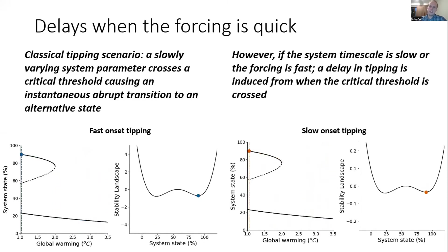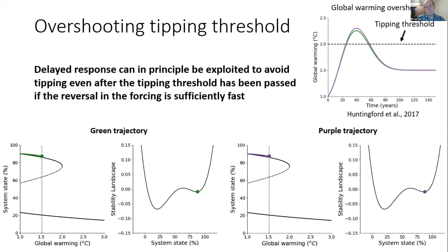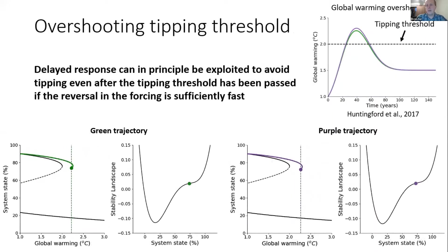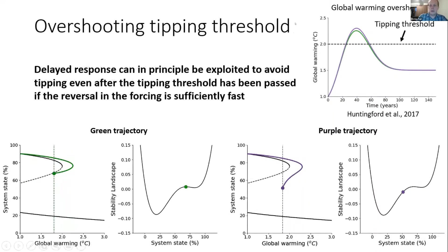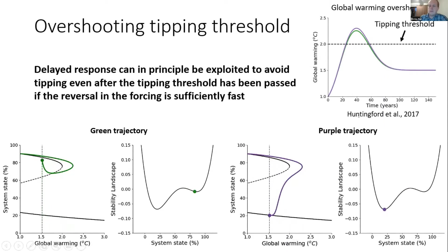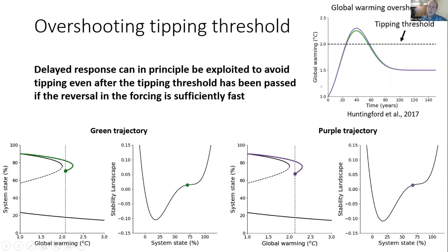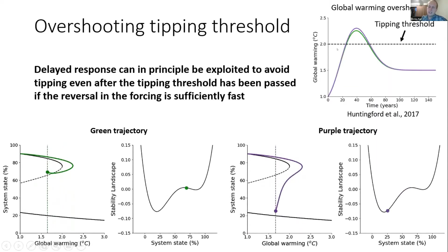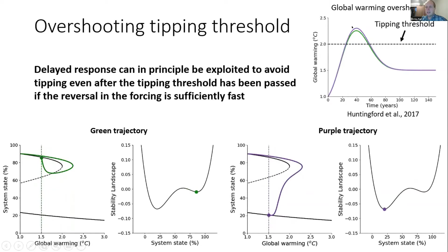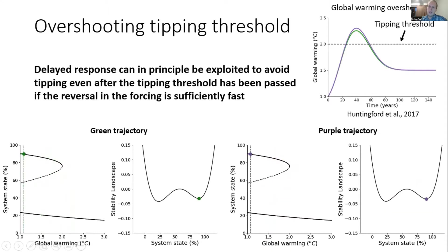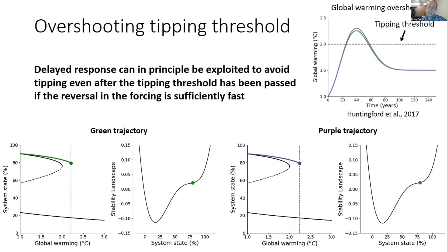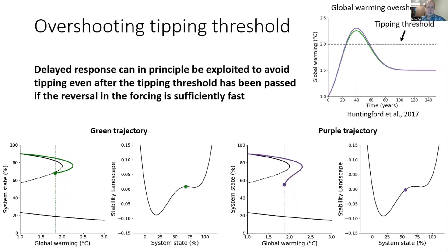We're now going to take this slow onset tipping system and force it with global warming overshoots as given in the top right here. These take the form from the Huntenford et al. 2017 paper: global warming starts at roughly one degree, increases to beyond some tipping point threshold to a peak global warming, before reversing back down below the threshold and stabilising at the one and a half degree level corresponding to the Paris climate targets.